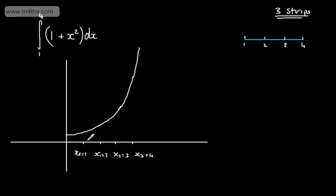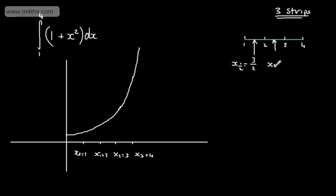What I'm now going to do is build up rectangles. The rectangle height is going to be the value when I take x sub-half — the mid-ordinate. The mid-ordinate between 1 and 2 is 3/2, labelled x sub 1½. The next mid-ordinate gives x sub 3/2, or 1.5, which gives 5/2. And the final mid-ordinate is x sub 5/2, or 2.5, giving 7/2.